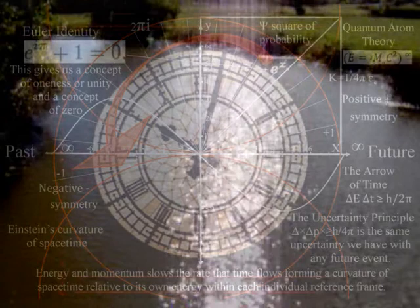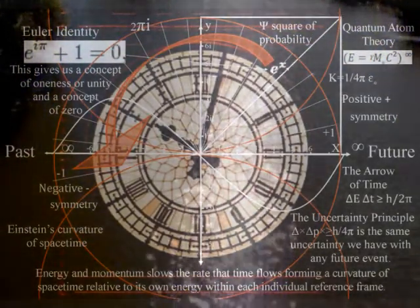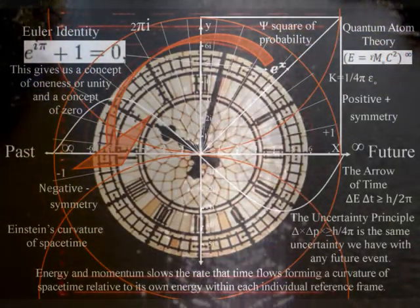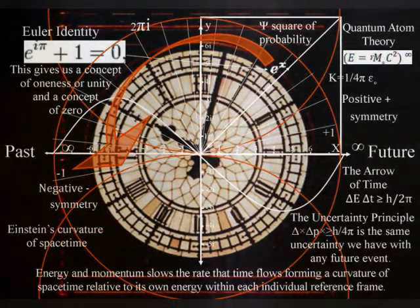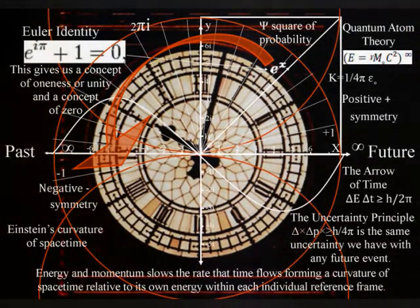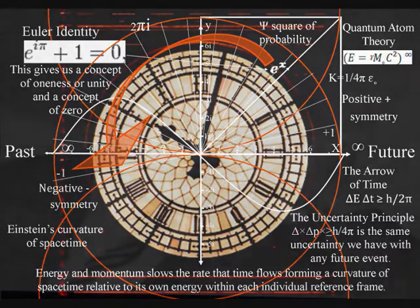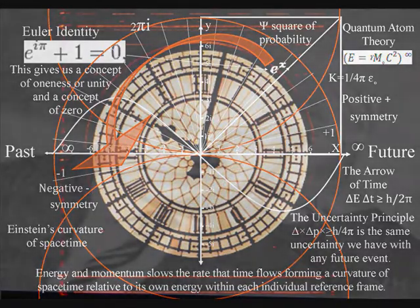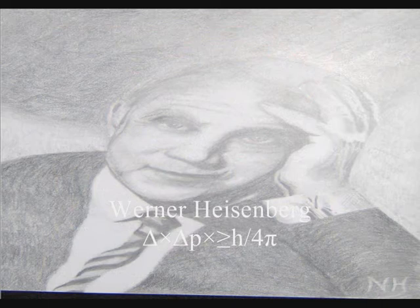Time is continuously being formed, photon by photon, by the spontaneous absorption and emission of light waves of electromagnetic radiation. A process of continuous change, continuous energy exchange, forming the future uncertainty of everyday life. This uncertainty can be seen, mathematically, as Heisenberg's uncertainty principle of quantum physics.